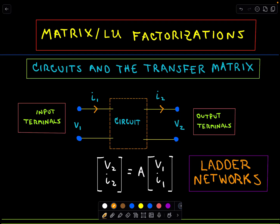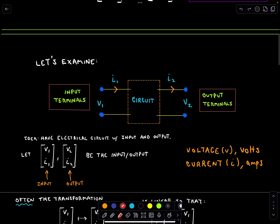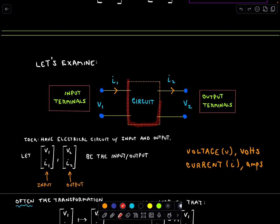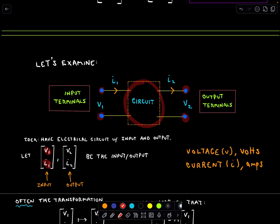In this video I'm going to talk about ladder networks and circuits, and we're going to talk about this in conjunction with our matrix LU factorizations. So let's first describe what's going on here. The idea is we have some sort of electric circuit, and into that electric circuit we have some input terminals and some output terminals. On the input terminals we have some information about both the voltage and the current.